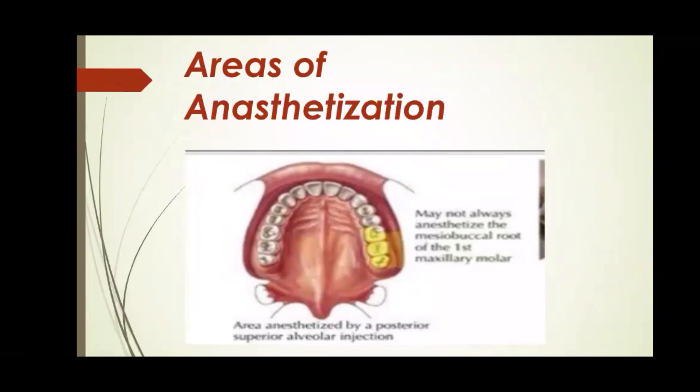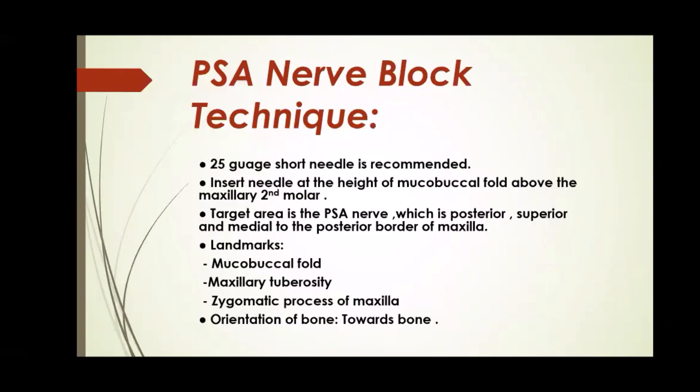The areas of anesthetization: the posterior superior alveolar nerve block anesthetizes the maxillary first, second, and third molar, and may not always anesthetize the mesiobuccal root of the first maxillary molar. For the technique, a 25-gauge short needle is recommended. The needle is inserted at the height of the mucobuccal fold above the maxillary second molar. The target area is the PSA nerve, which is posterior, superior, and medial to the posterior border of the maxilla.